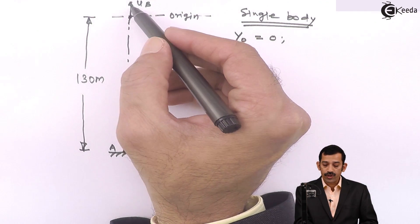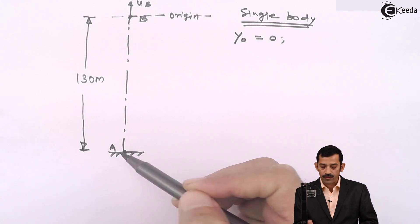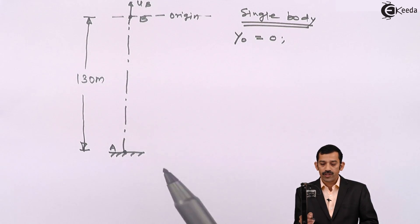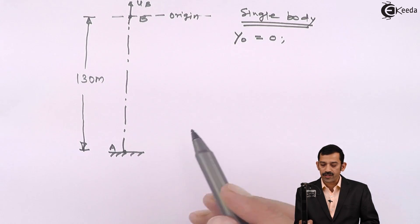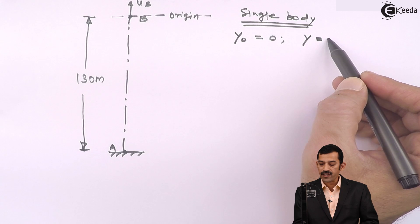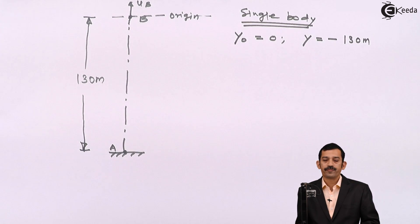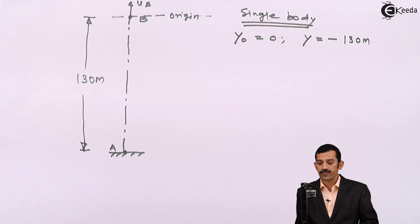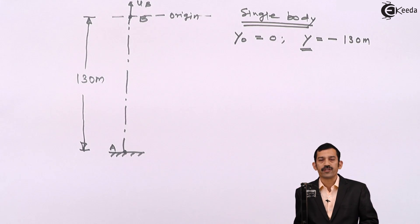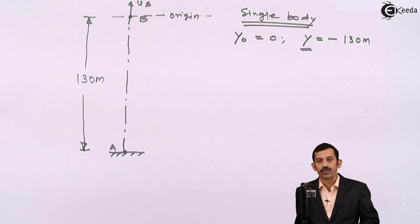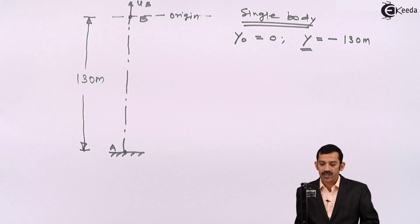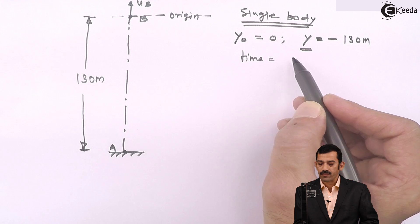When the body is thrown and finally strikes the ground, the final position must be written with respect to the origin. Since the ground is below the origin at a distance of 130 meters, the final position Y = −130 meters. If the final position is below origin, Y is negative; if above origin, Y is positive. Time counting starts from where the particle starts its motion.